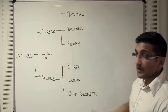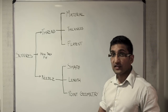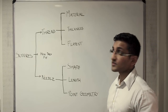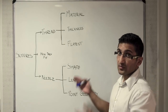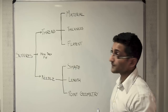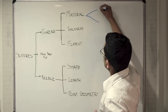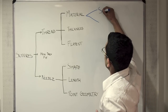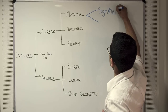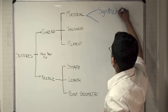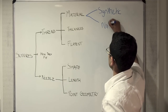Starting off thinking about the thread. You can think about the thread in terms of the material, the thickness, and the composition in terms of the filaments. Sutures can be either made of synthetic materials or natural materials, and increasingly there is a move towards synthetic materials due to their advantages.